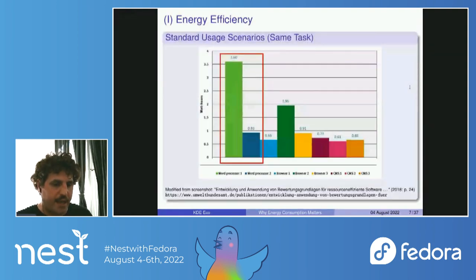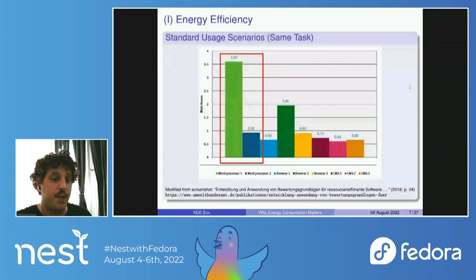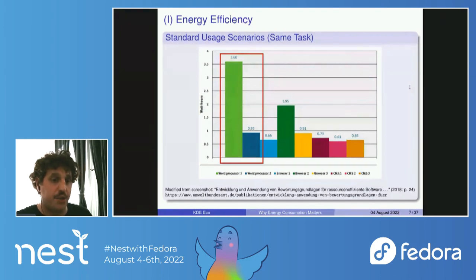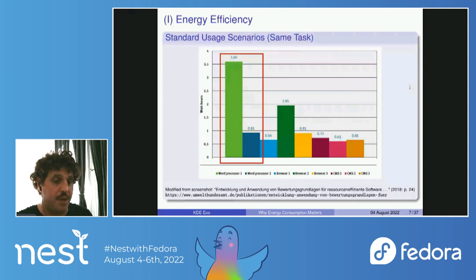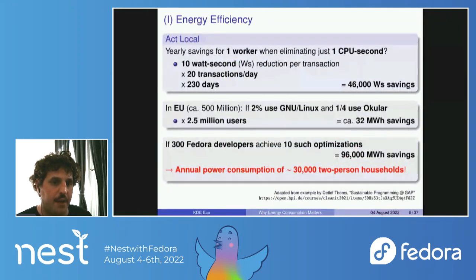Let's look at energy efficiency. This is from a report from the German Environment Agency comparing different computer programs doing the exact same thing. I'm focusing on the two far-left bar plots — a comparison of word processors. Word processor one in light green and word processor two in dark blue. Doing the exact same thing, word processor one consumes four times the energy compared to word processor two. This might not make a big difference for one individual user, but you have to think about it at scale.